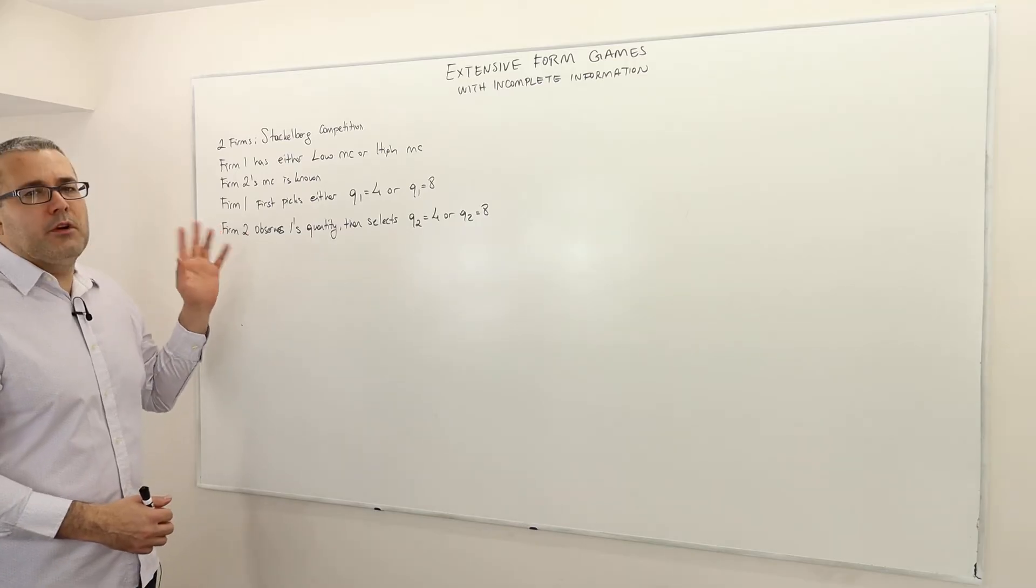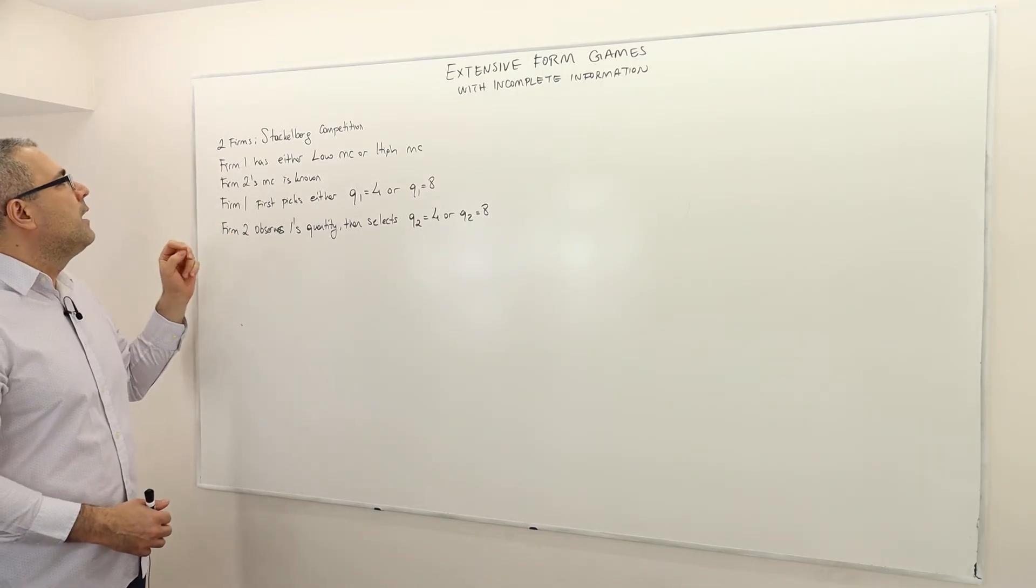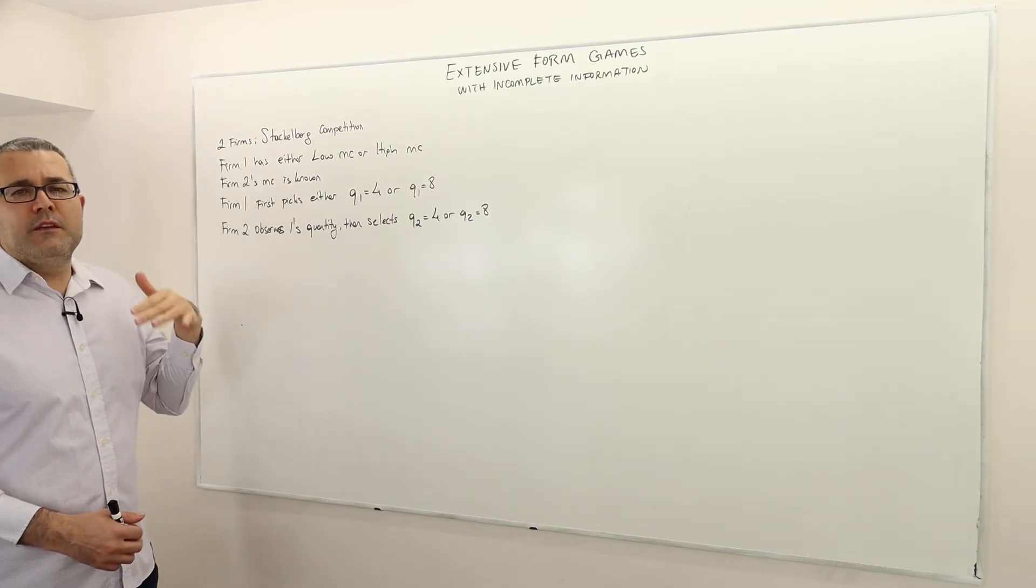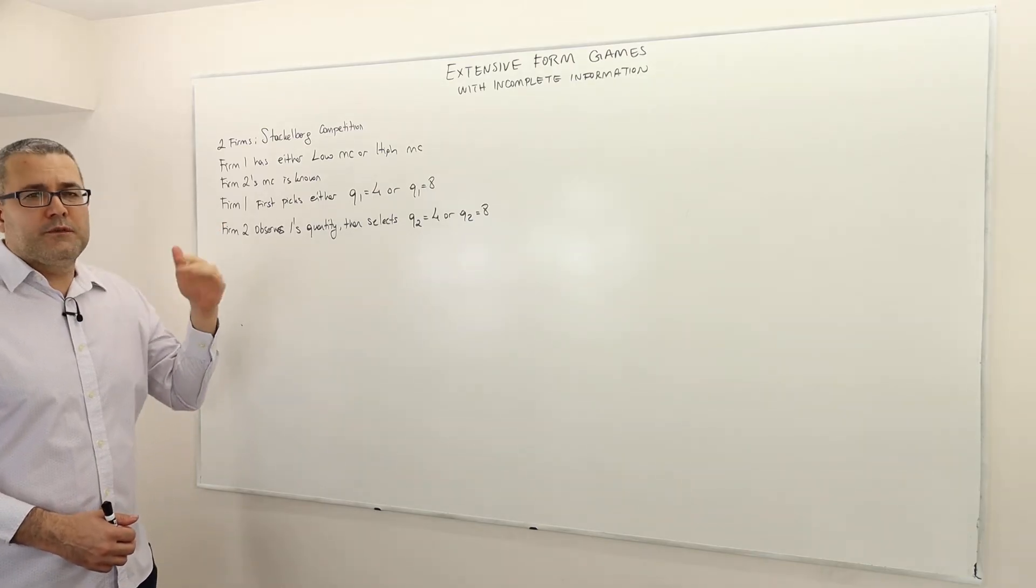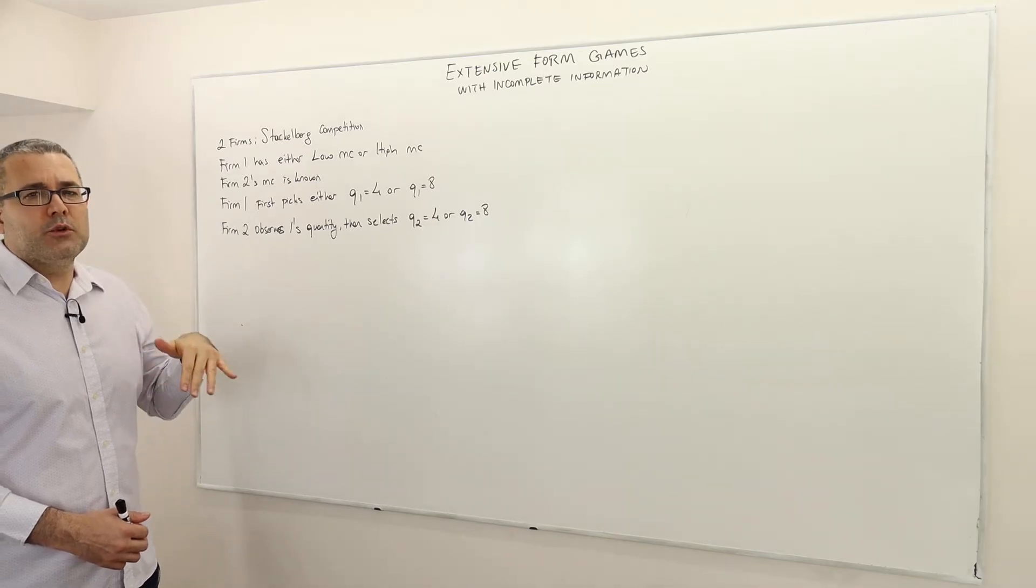So this is a standard Stackelberg competition. There are two firms, firm 1 and firm 2. Firm 1 moves first and then firm 2 observes firm 1's quantity choice and then firm 2 chooses its own quantity.